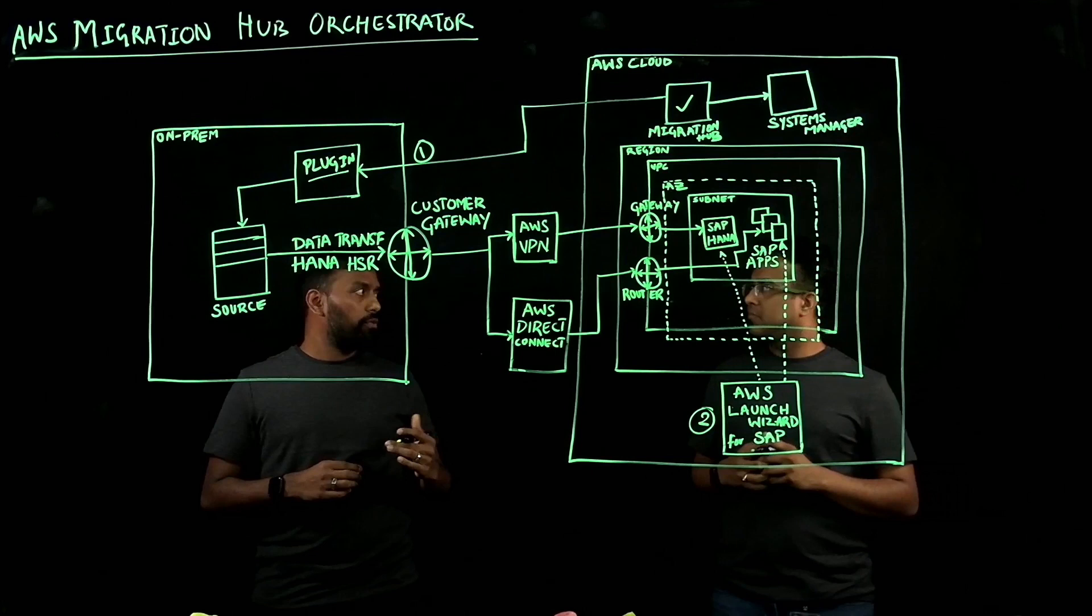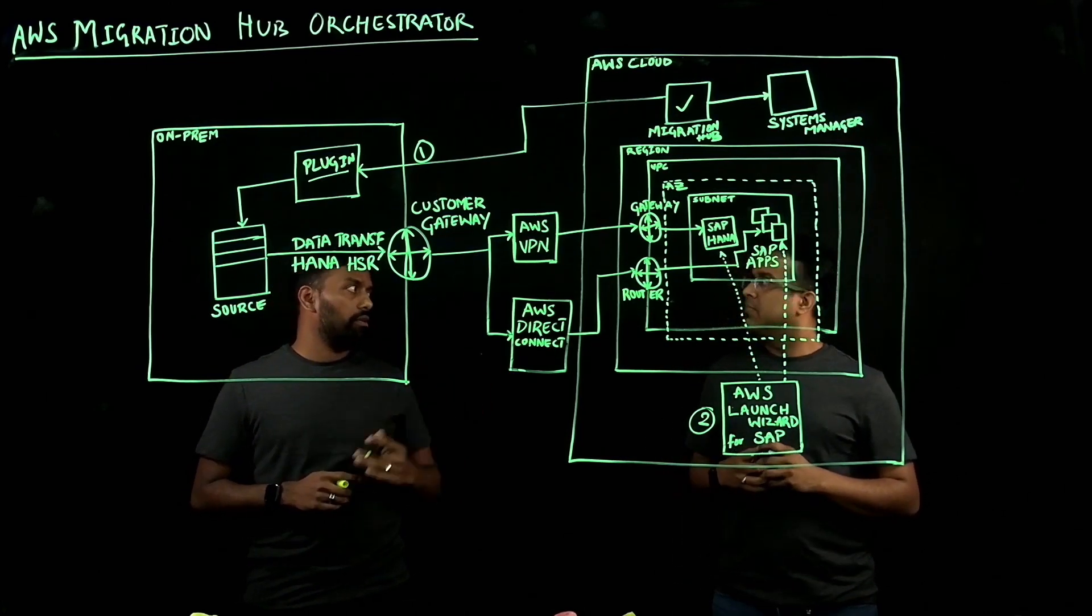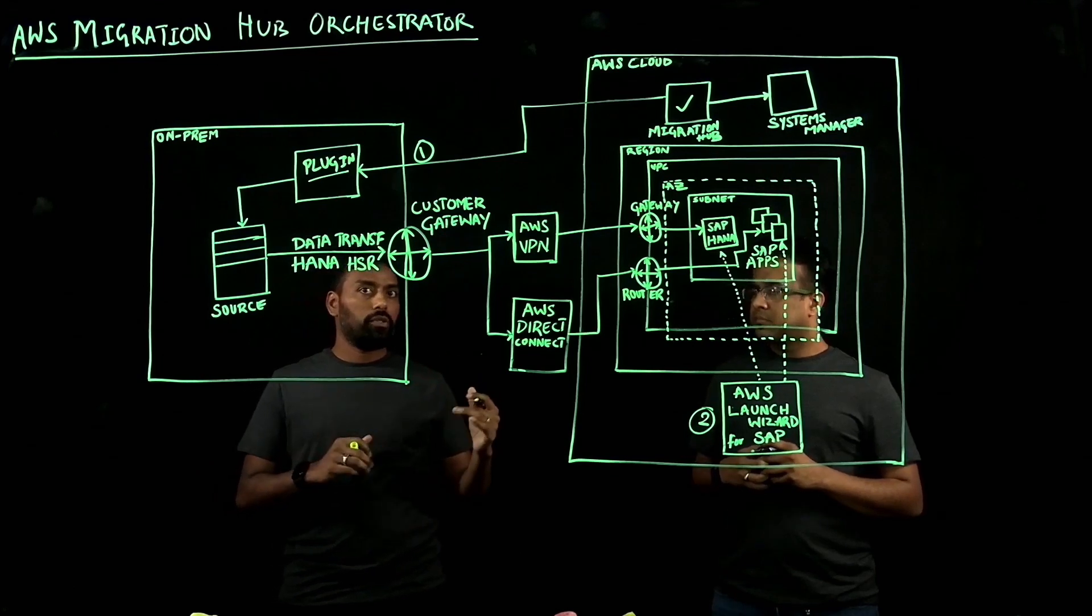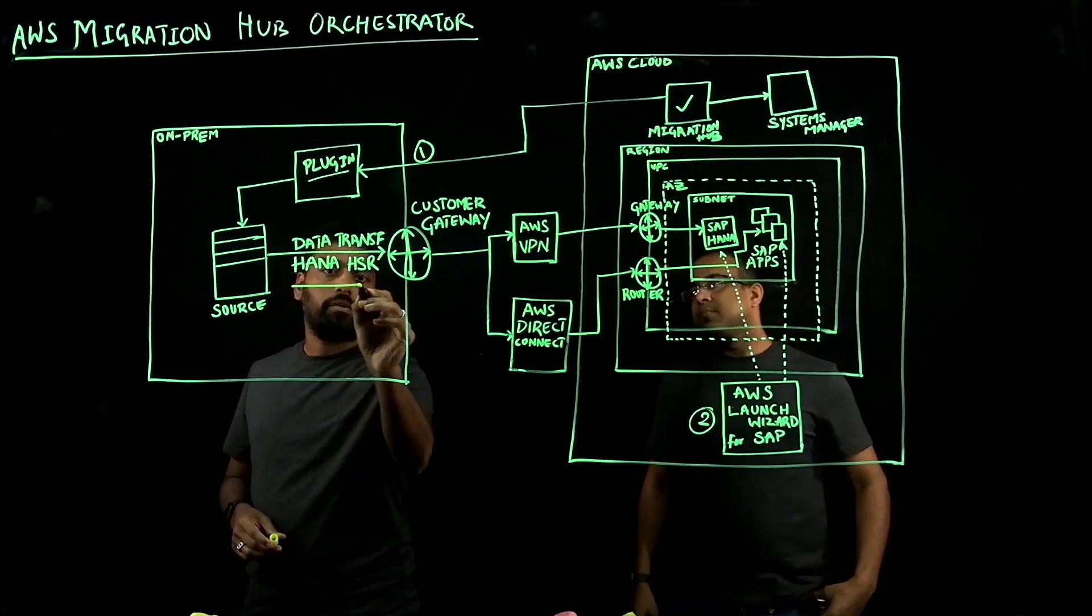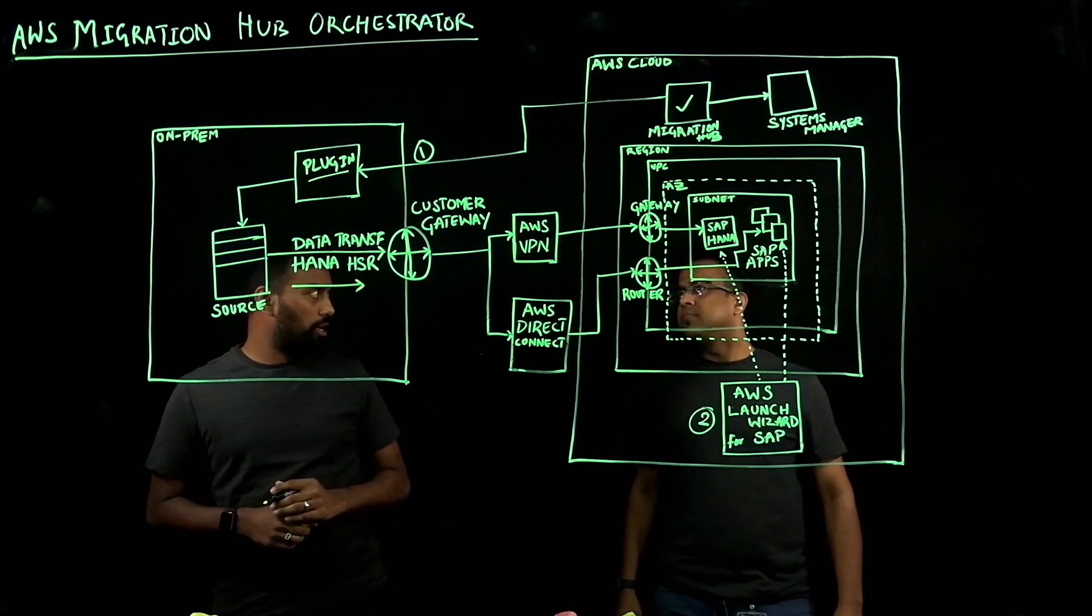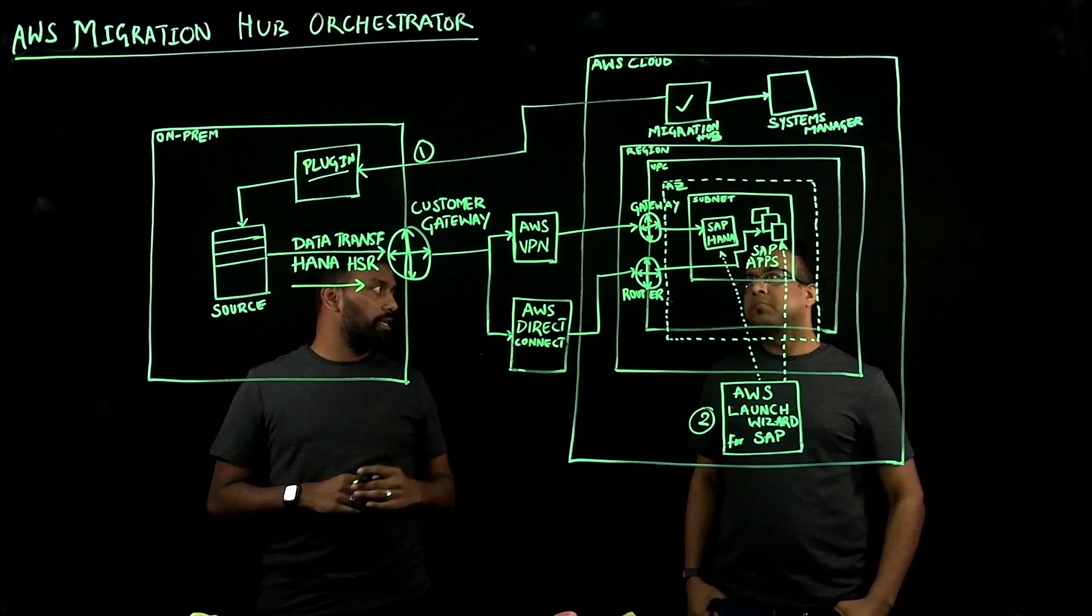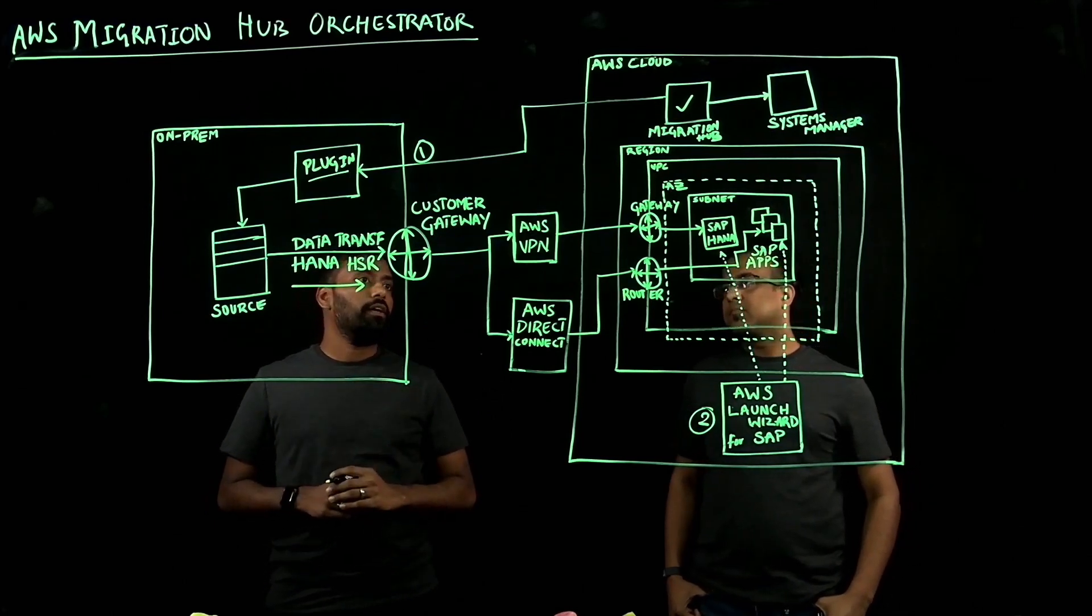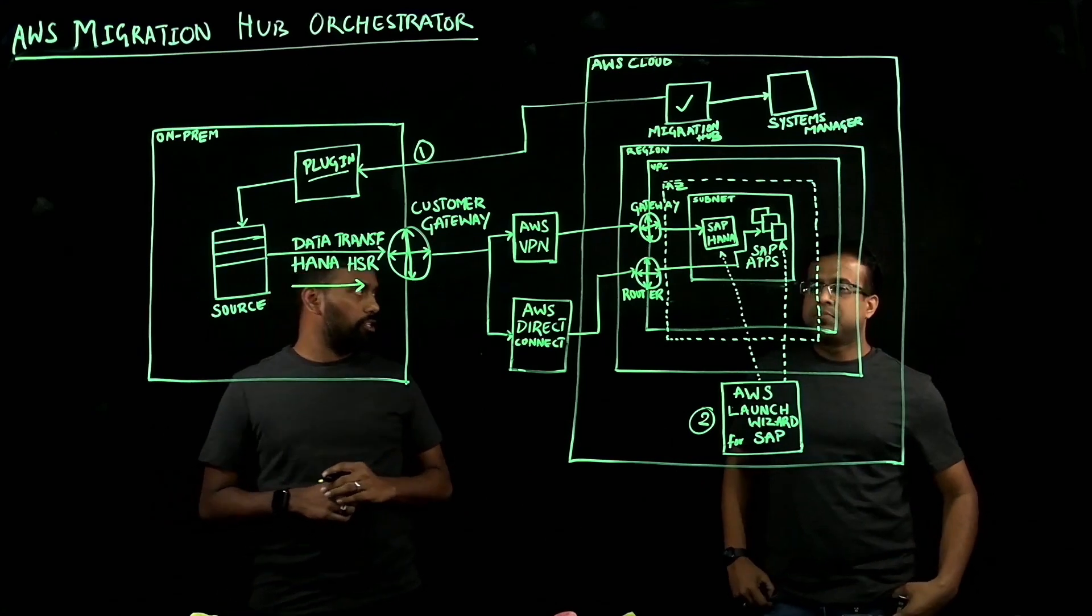You create this workflow. That would be your step number three. And then, you execute the workflow. When you execute the workflow, the Migration Hub Orchestrator sets up the HSR for you. It validates the connectivity between the source and target. It sets up the HSR. And it also lets you launch your target SAP applications.